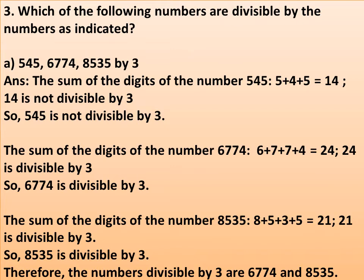The sum of the digits of 6774 is 6 + 7 + 7 + 4 = 24. Since 24 is divisible by 3 (8 × 3 = 24), therefore 6774 is divisible by 3. The sum of the digits of 8535 is 8 + 5 + 3 + 5 = 21. Since 21 is divisible by 3 (7 × 3 = 21), therefore 8535 is divisible by 3. The numbers divisible by 3 are 6774 and 8535.